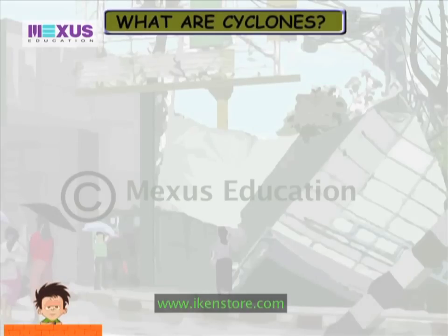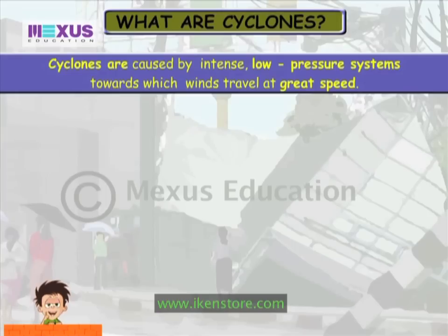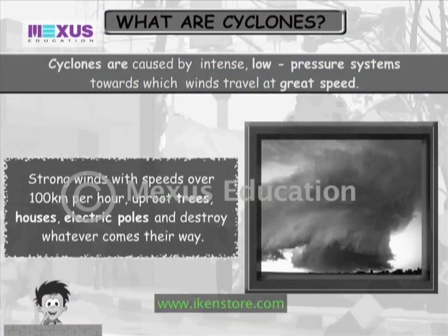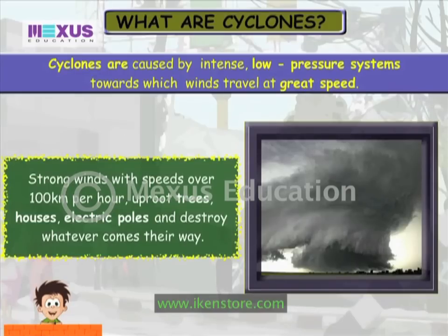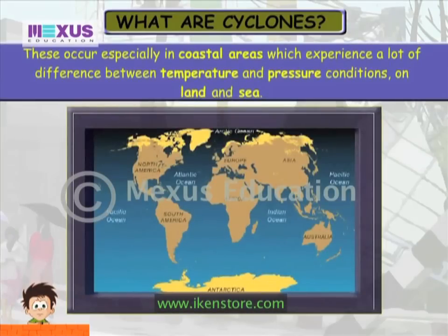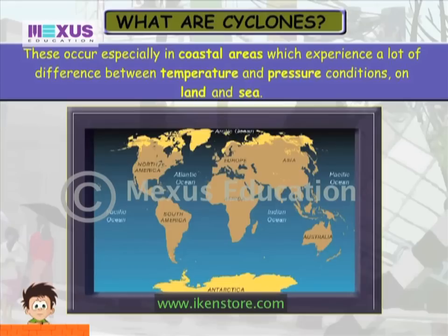What are Cyclones? Cyclones are caused by intense low pressure systems towards which winds travel at great speeds. Strong winds with speeds over 100 kilometers per hour uproot trees, houses, electric poles and destroy whatever comes in their way. These occur especially in coastal areas which experience a lot of difference between temperature and pressure conditions on land and sea.